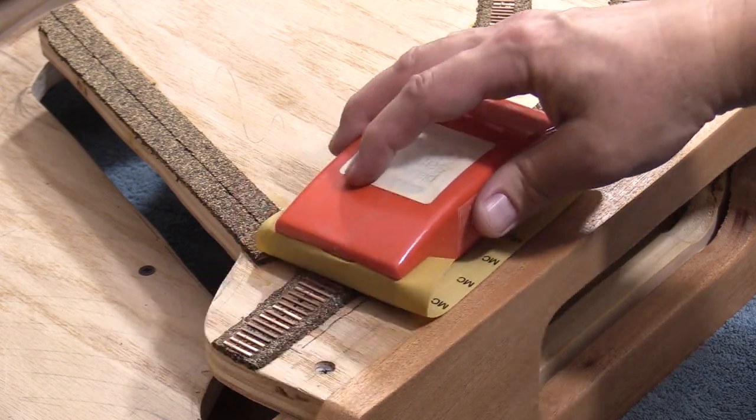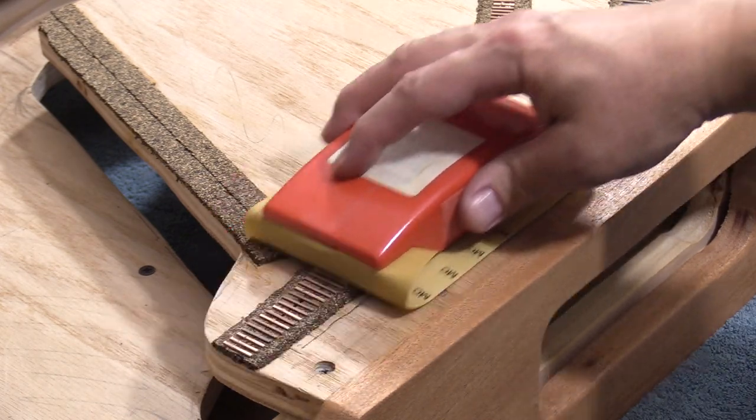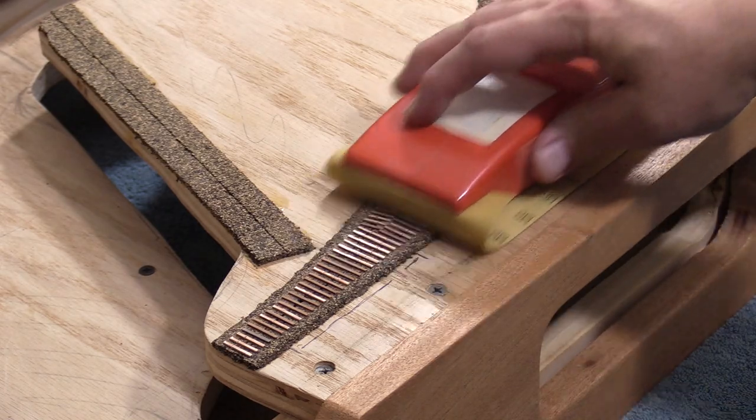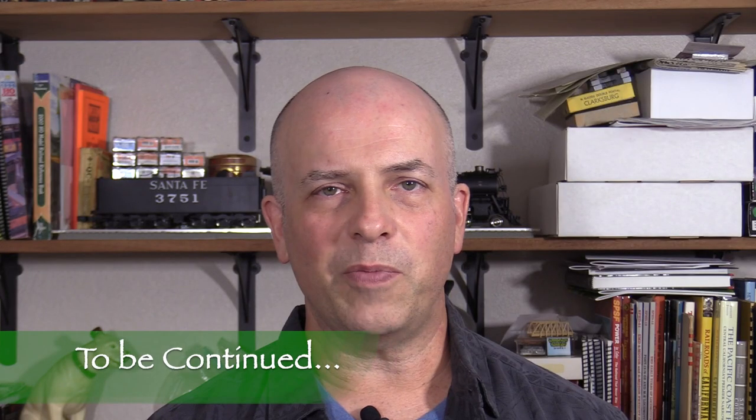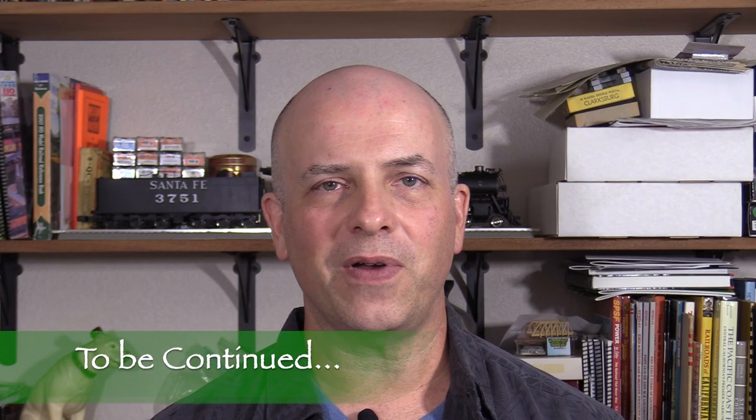After letting the glue set up for a few hours, I'll give the tops of the ties a light sanding to help smooth out any variations in height. This will also clean the copper on the PC board ties. I'm pretty happy with how the layout is turning out so far.